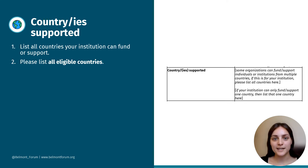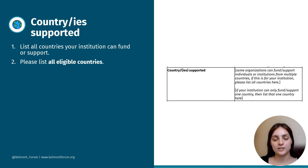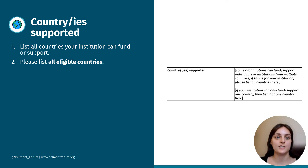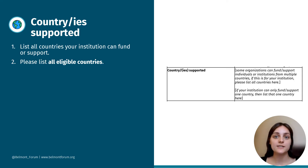Moving on to the second box: country or countries supported. List all the countries your institution could fund or support. Some institutions can fund individuals and/or organizations from one country, others from multiple countries. Please list all eligible countries here.